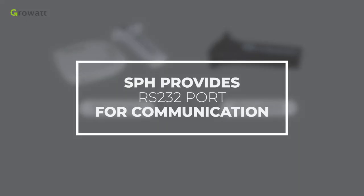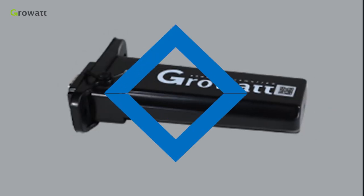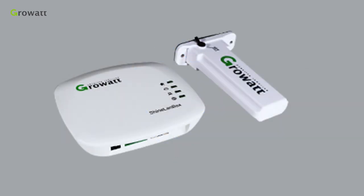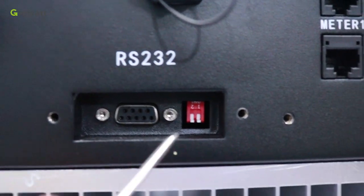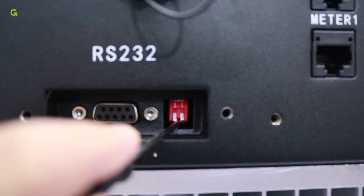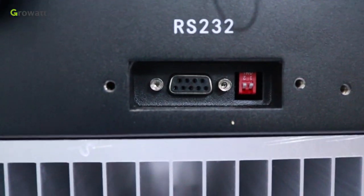SPH provides the RS232 port for communication. The whole energy storage system can be monitored via Shine Wi-Fi and Shine Link. Firstly, turn the pin 1 and pin 2 to ON before connecting Shine Wi-Fi or Shine Link to RS232 port.